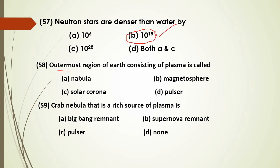The outermost region of the Earth consisting of plasma is called the ionosphere. The Crab Nebula is a rich source of plasma.